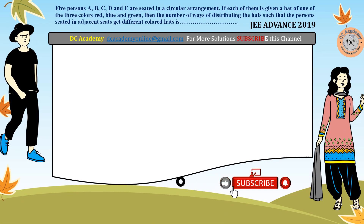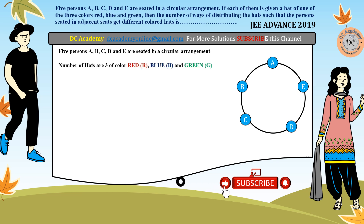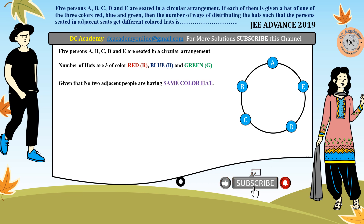So now 5 persons are given: A, B, C, D, E, and they are seated in a circular arrangement. Let's make a circular arrangement and label them in order: A, B, C, D, E. The number of hat colors are three: red, blue, and green. No two adjacent people have the same color.